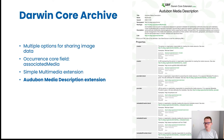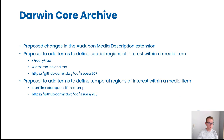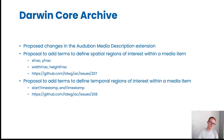Another option is the Audubon Media Description extension, which is based on the Audubon Core standard. This is somewhat similar to the Simple Multimedia extension but has a lot more fields. More importantly, there are two proposals to add terms to the Audubon extension which are very relevant for video annotation. The first proposal is to add a term to define a spatial region within a media item, which could be helpful when you want to highlight an organism in a video frame. The second proposal is to add a term to define a temporal region of interest, useful for pointing to a time range in a video file — so you can link to a complete video file but point to a specific frame and a specific region within that frame for each occurrence.